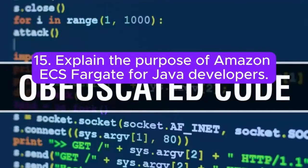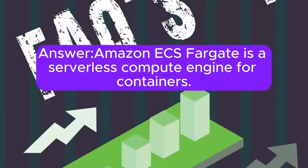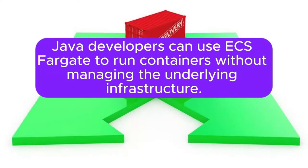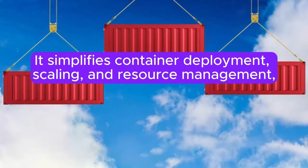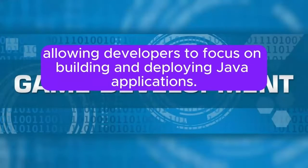Question 15: Explain the purpose of Amazon ECS Fargate for Java developers. Amazon ECS Fargate is a serverless compute engine for containers. Java developers can use ECS Fargate to run containers without managing the underlying infrastructure. It simplifies container deployment, scaling, and resource management, allowing developers to focus on building and deploying Java applications.